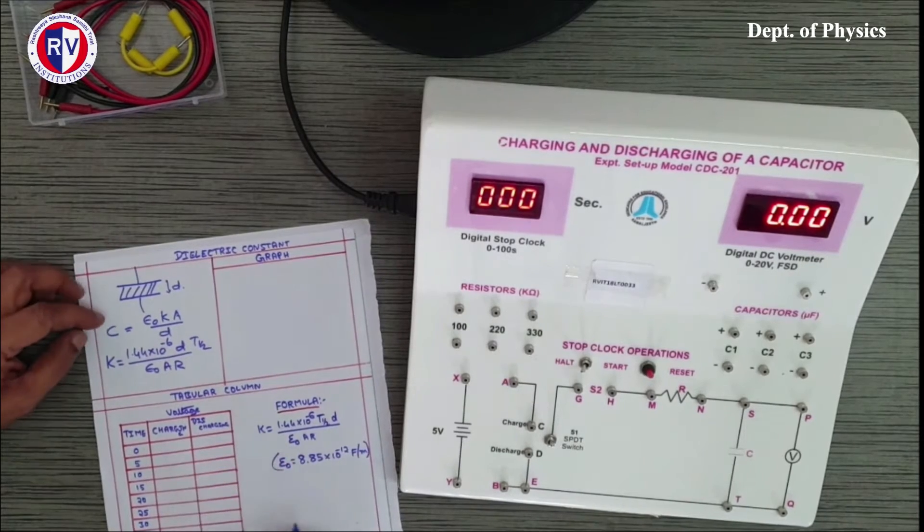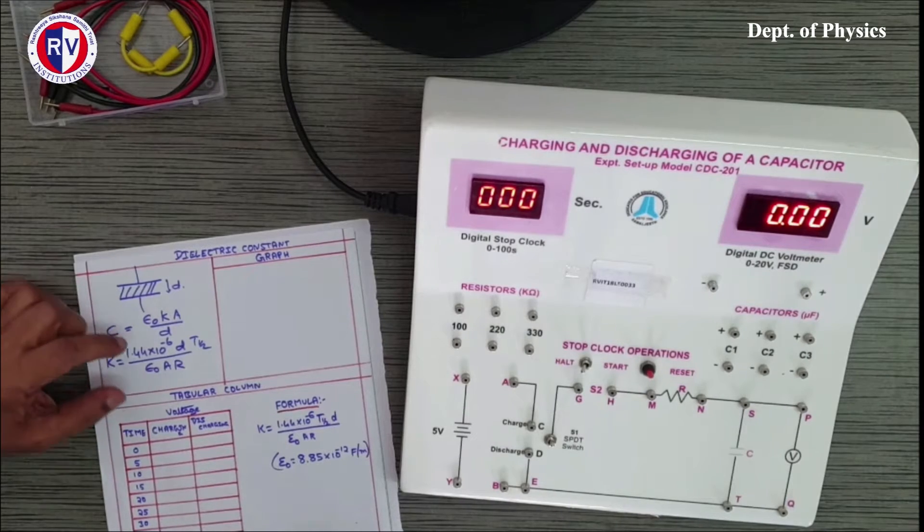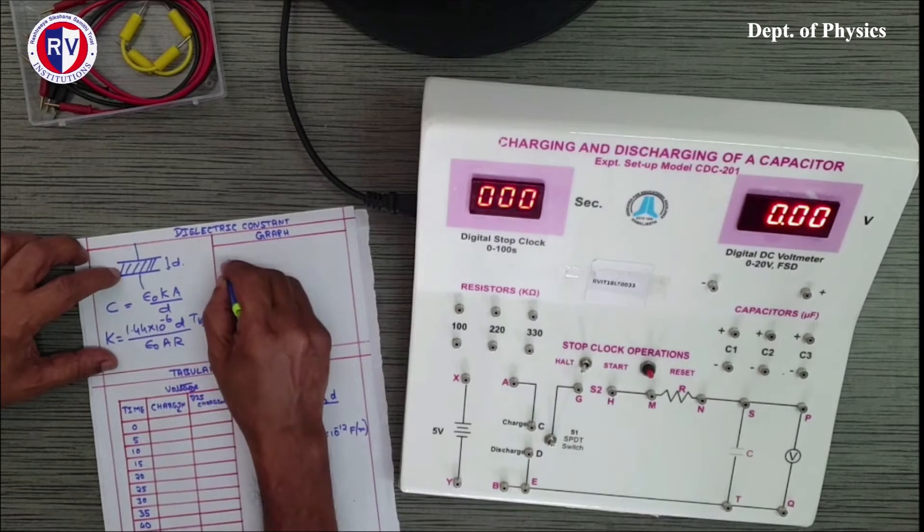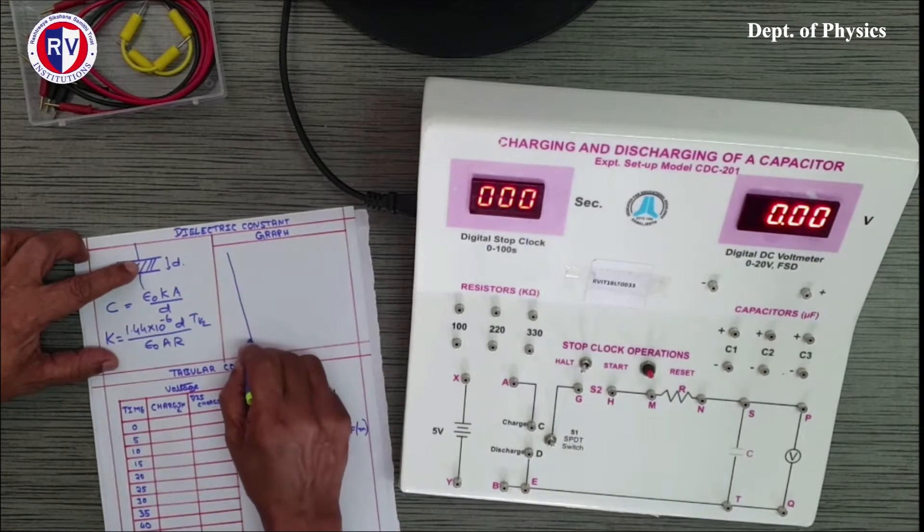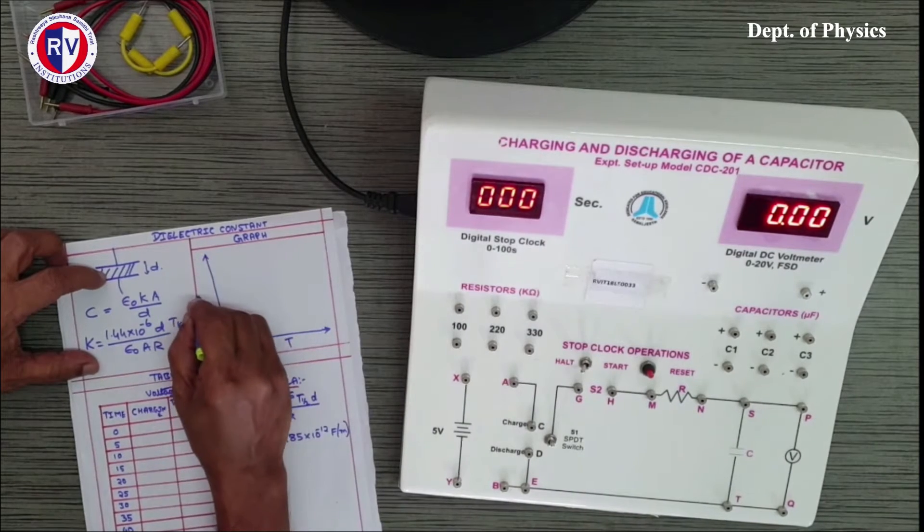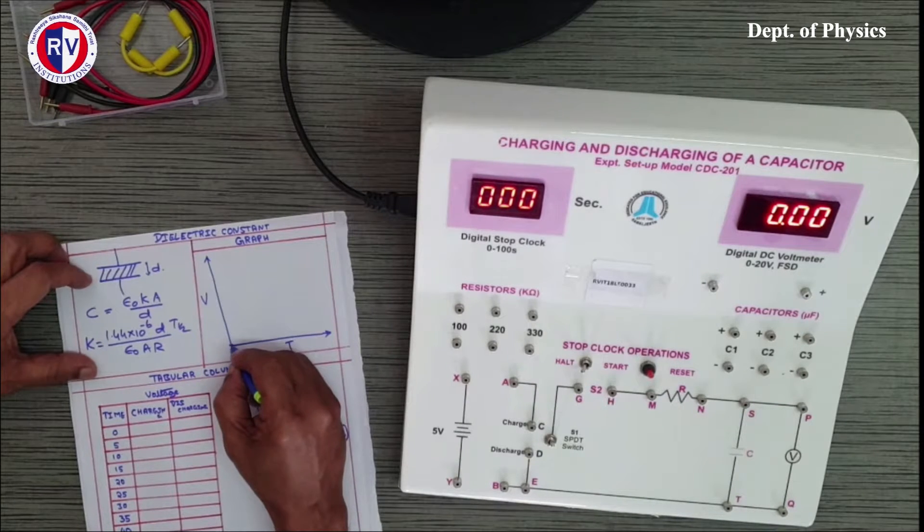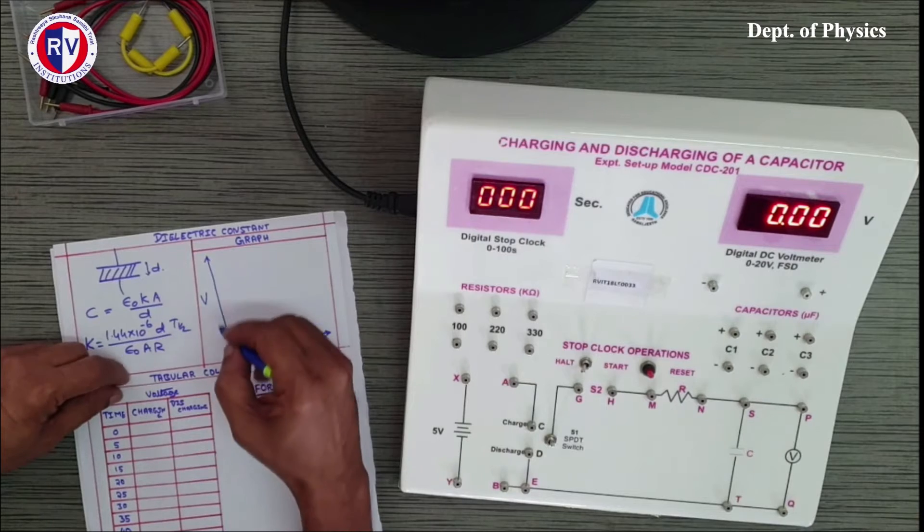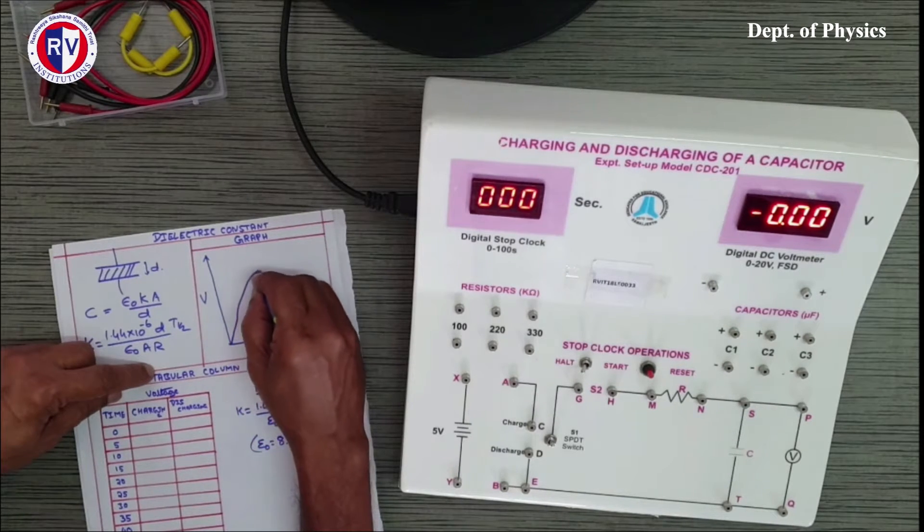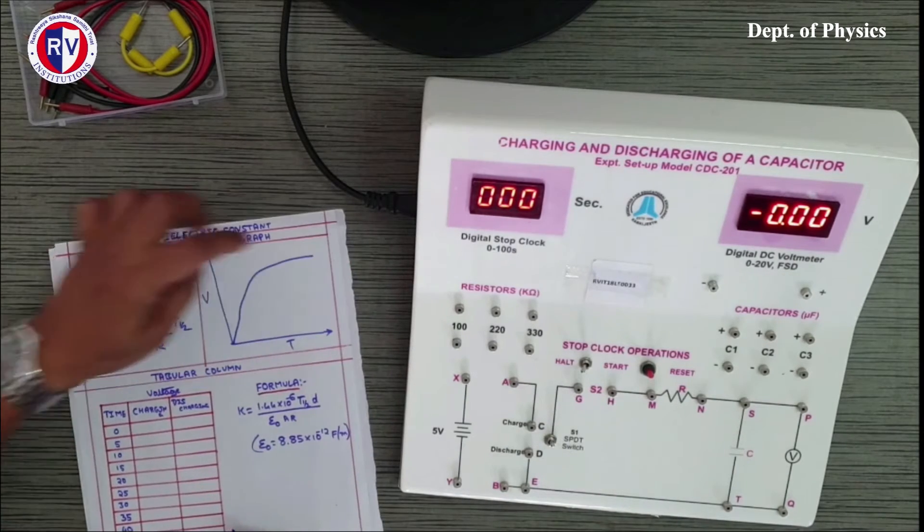To find out the t_half value, we have to draw the charging and discharging curves. When you apply a particular potential difference across the capacitor, the capacitor will get charged. Along the x-axis if I take the time of charging and along y-axis the voltage across the capacitor, starting from zero, initially very fast, it is an exponential increase. After some time it will become steady, it will be saturated, reaching the maximum. This is called the charging curve.